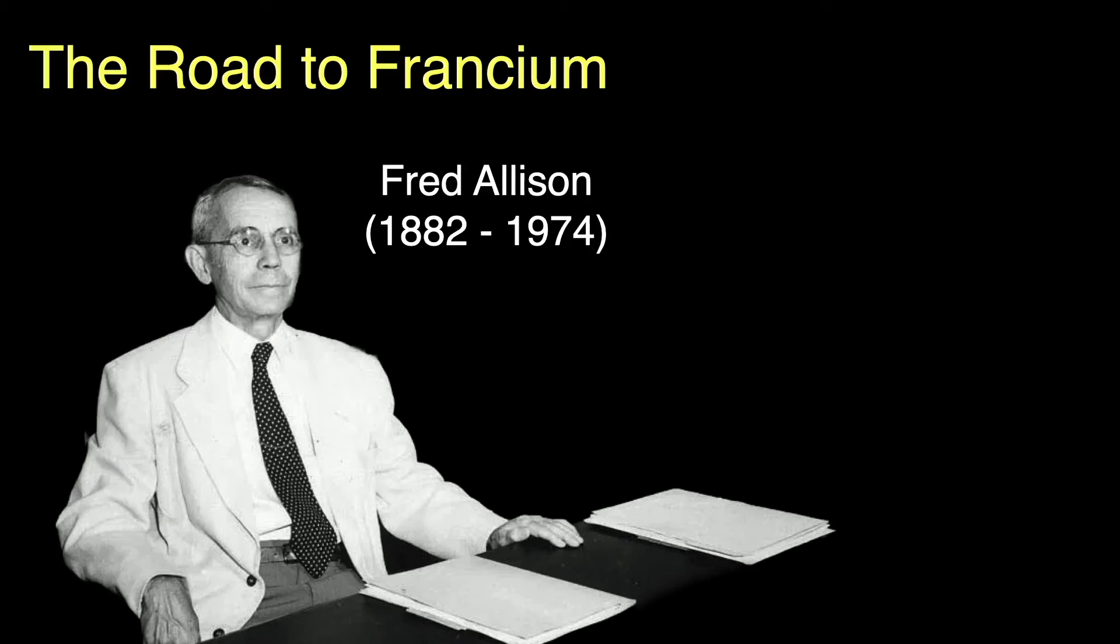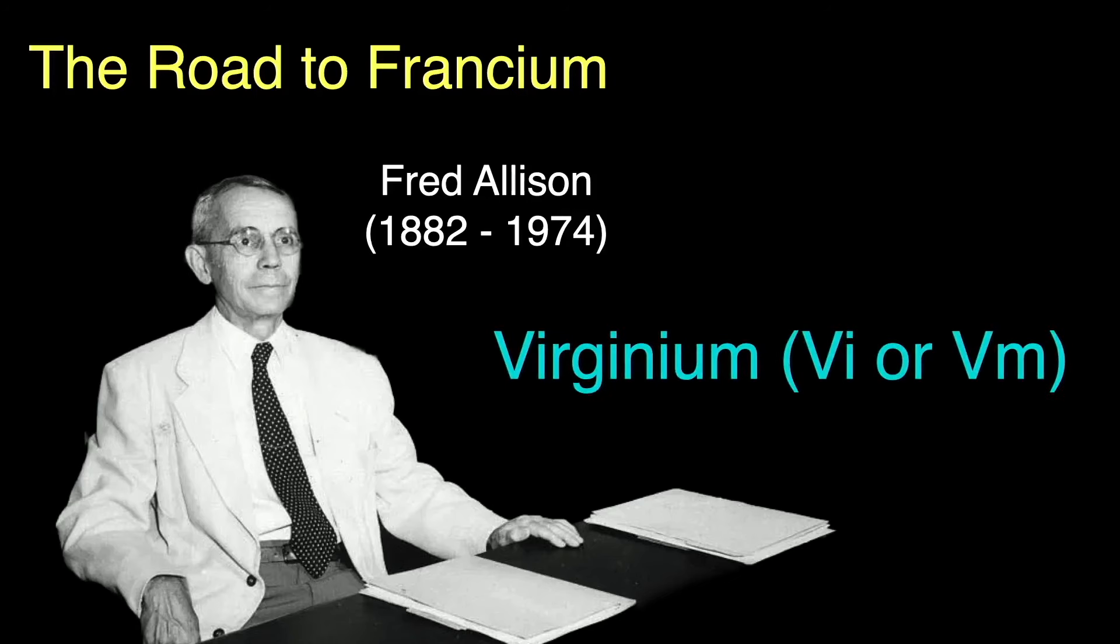In 1930, Fred Allison at the Alabama Polytechnic Institute also claimed the discovery of element 87. He wanted to name the element virginium, chemical symbol VI or VM, after his home state. He also claimed the discovery of astatine using magneto-optic spectroscopy methods. Four years later, in 1934, H.G. McPherson at UC Berkeley disproved Allison's method and discovery.